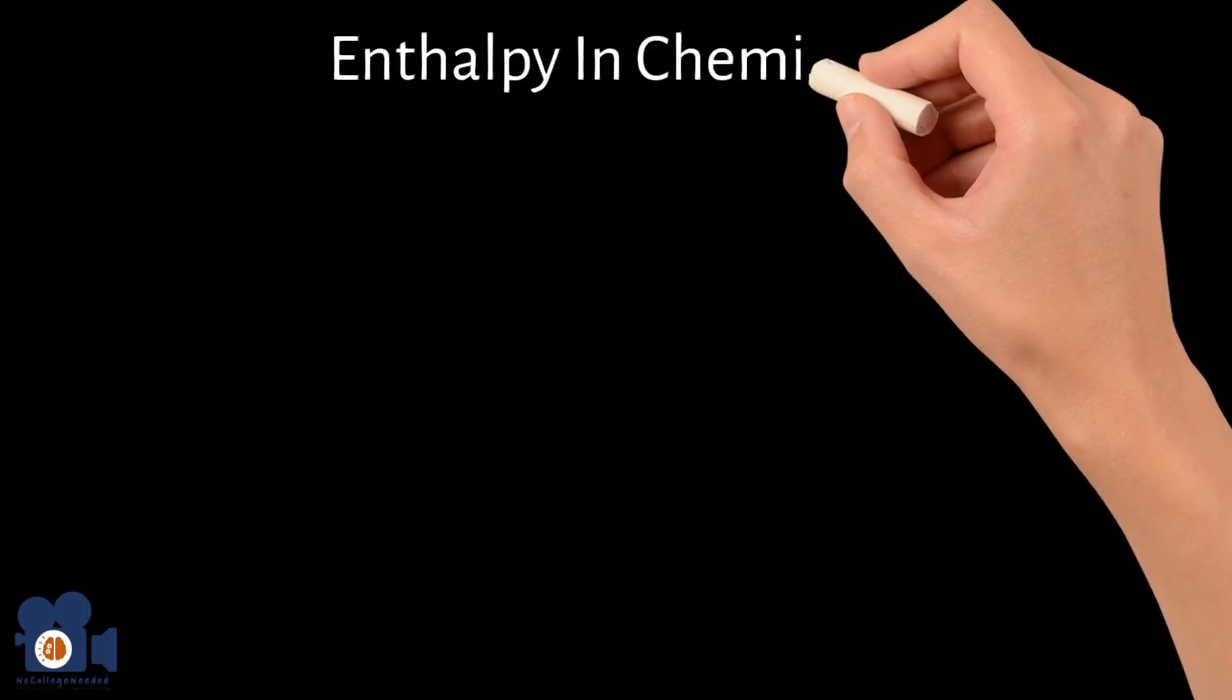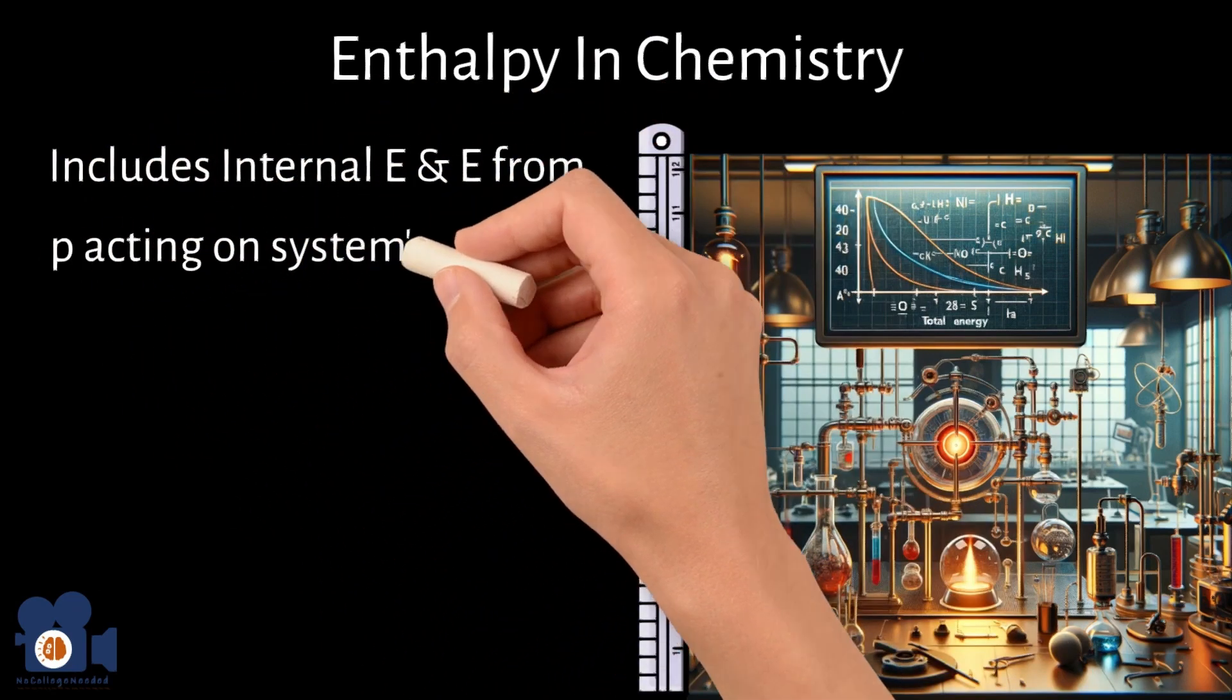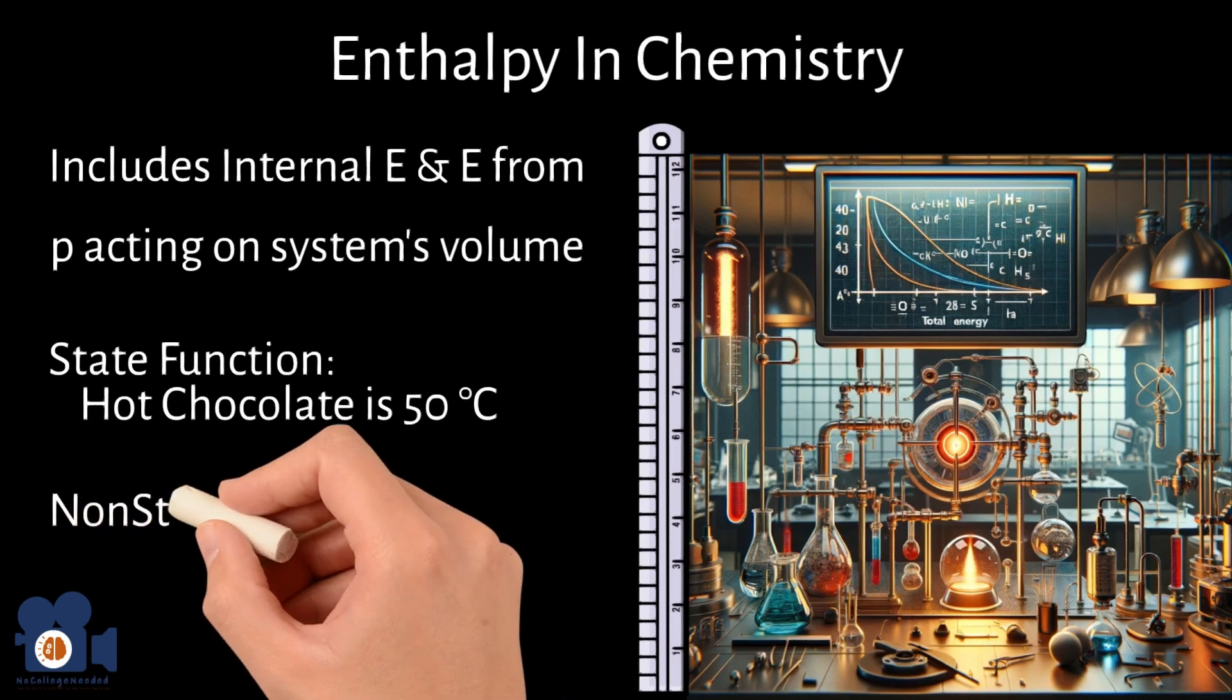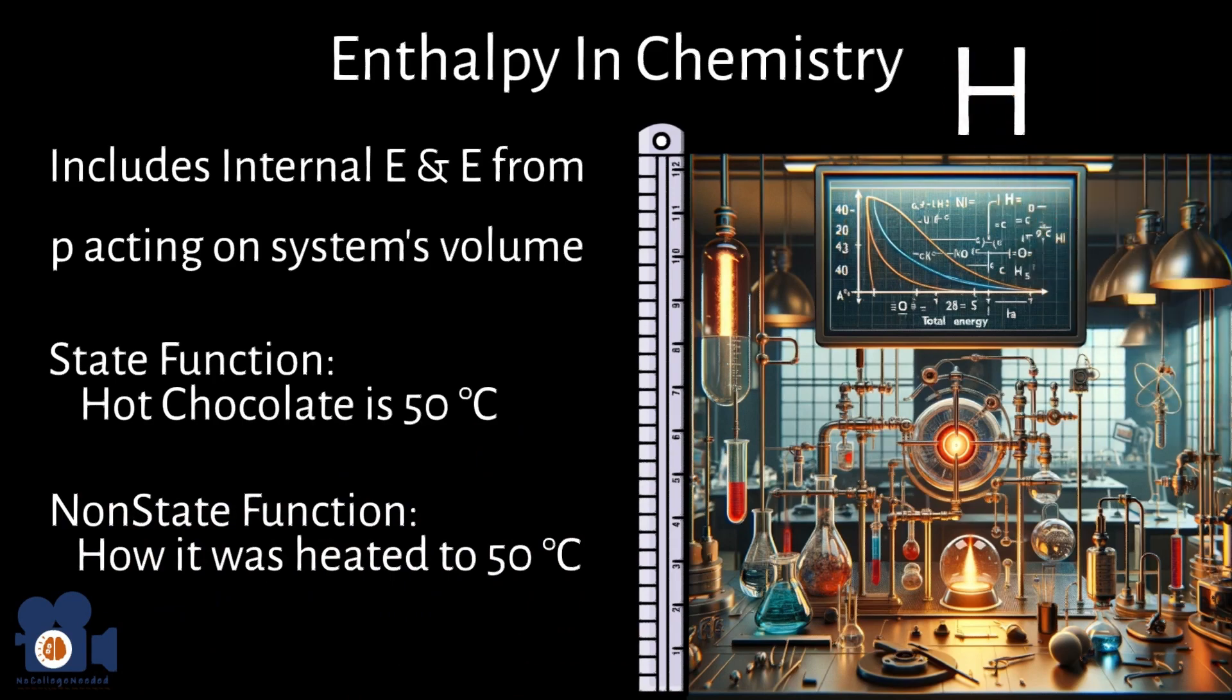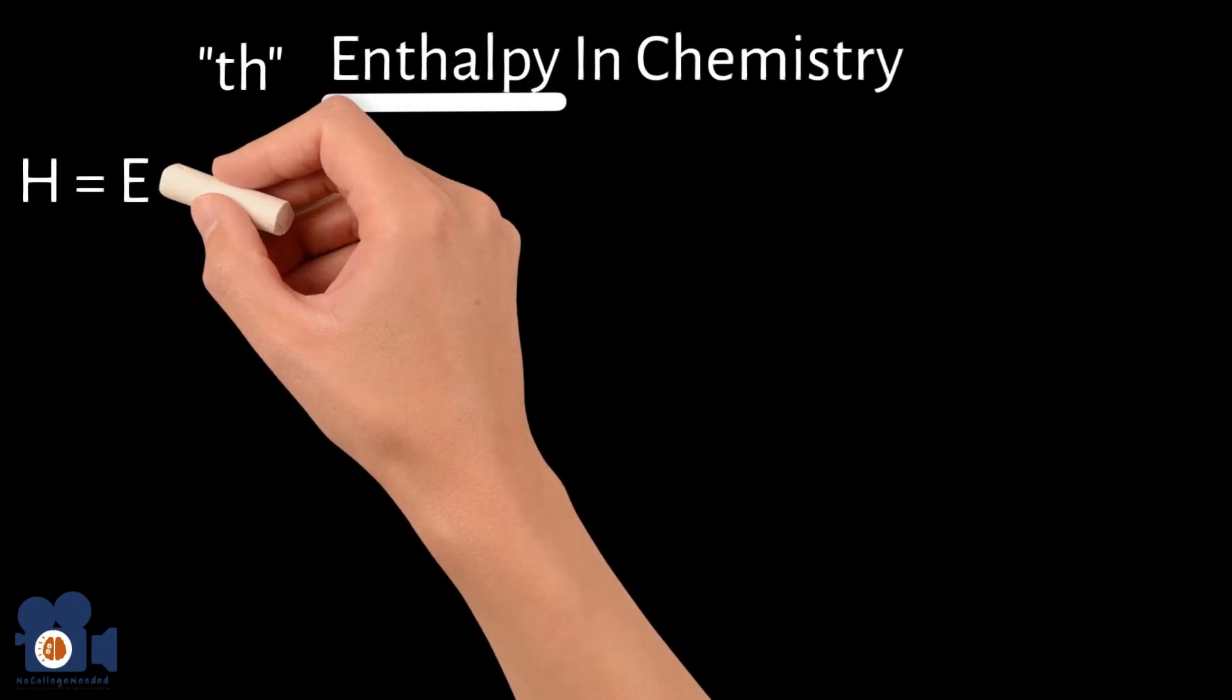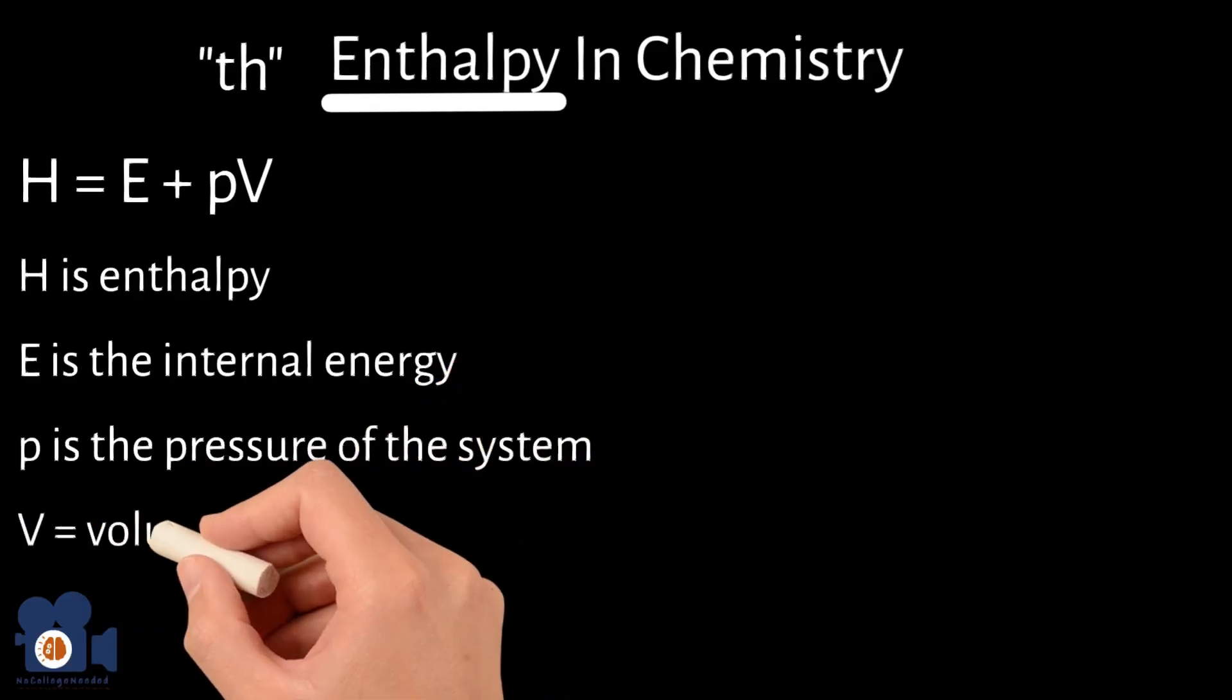Enthalpy in chemistry is a measure of the total energy of a thermodynamic system. It includes the internal energy and the energy established from pressure acting on the system's volume. Enthalpy is a state function, a property that only depends on a system's current condition, not how it got there, like temperature or pressure, and is denoted by the symbol H. I find it easiest to remember it being H by emphasizing the TH in enthalpy. It's defined as H equals E plus PV, where H is enthalpy, E is the internal energy of the system, P is the pressure of the system, and V is the volume of the system.